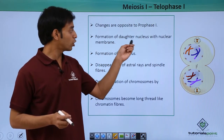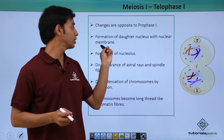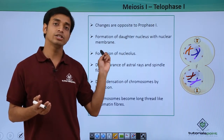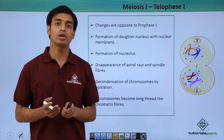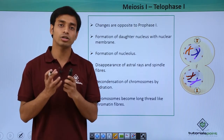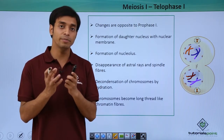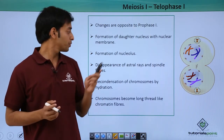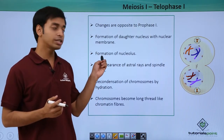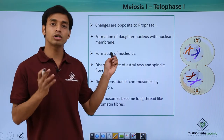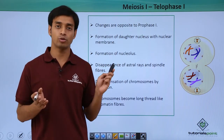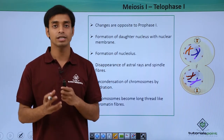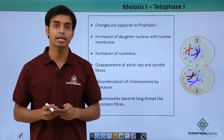Here the formation of the daughter nucleus with nuclear membrane takes place. Initially in prophase 1 we saw that the nuclear membrane got dissolved. Similarly, the nucleolus which had dissolved in prophase 1 starts appearing again.